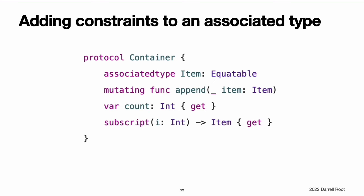Adding constraints to an associated type. You can add type constraints to an associated type in a protocol to require that conforming types satisfy those constraints. For example, this code defines a version of container that requires the items in the container to be equatable. To conform to this version of container, the container's item type has to conform to the equatable protocol.